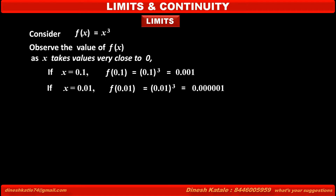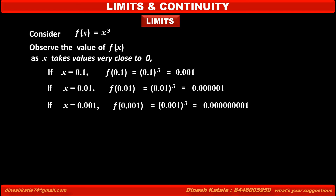When x = 0.001, which is very close to 0 compared to the first two values, then f(0.001) = (0.001)³, which is very close to 0 compared to the above two values.